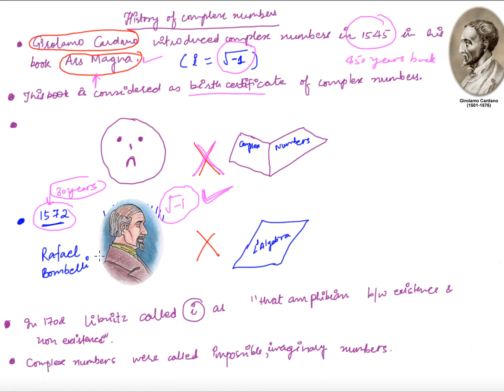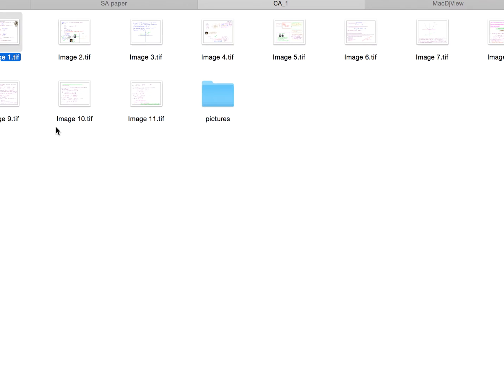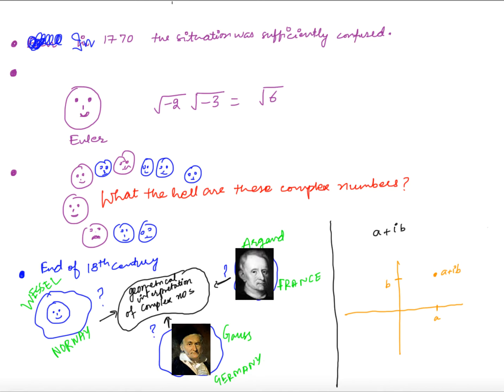For almost 250 years, complex numbers were thought of as weird. They were given names like 'impossible numbers' and 'imaginary numbers.' The famous mathematician Leibniz in 1702 said that i is 'an amphibian between existence and non-existence.' Even the great Euler in 1770 argued that the square root of minus two times the square root of minus three equals the square root of six — complex numbers were that puzzling.